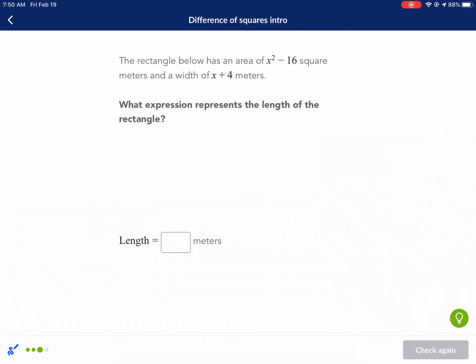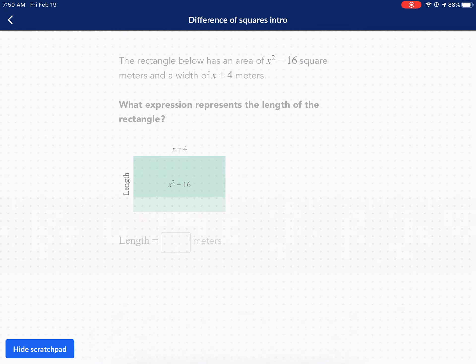All right, last question. Aren't you excited? Here we have x squared minus 16. And we know one of the lengths is x plus four, one of the factors is x plus four. So we know x plus four times something is going to give us x squared minus 16. Well, let's just factor this.